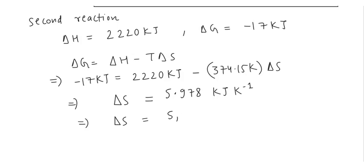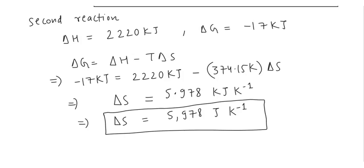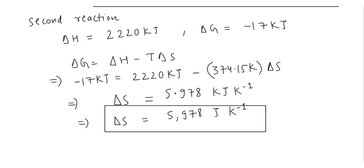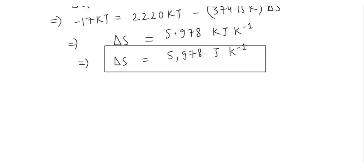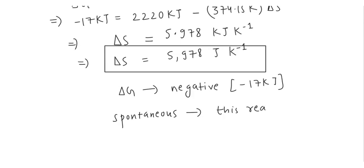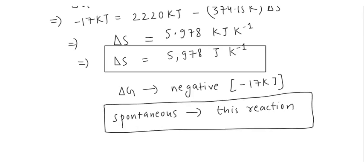And we already saw here that the delta G is given as negative, that is minus 17 kilojoule. Here the reaction that will be spontaneous will be this given reaction. This is the required answer for this question.